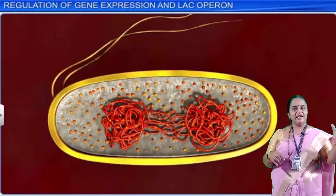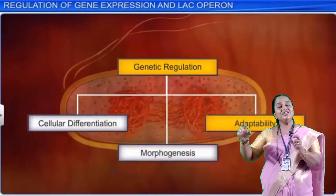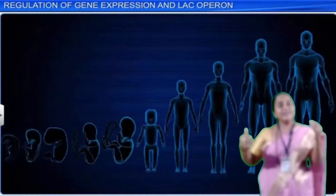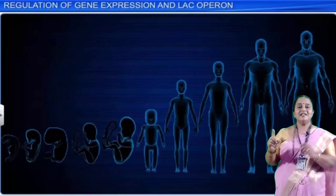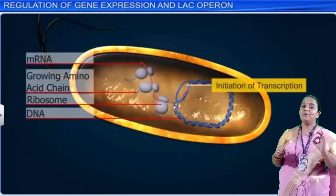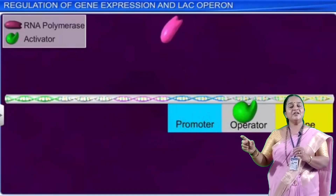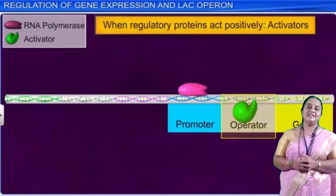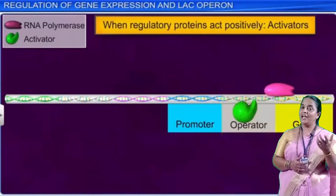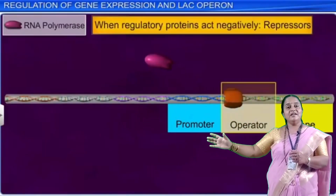mRNA has a cap, leader sequence, initiator codon AUG, and a sensible region with triplets arranged continuously without overlapping. The genetic code is universal in nature. Sometimes codons show ambiguity or degeneracy, but they show polarity during translation. A terminator codon prevents polypeptide synthesis — these are UAA, UAG, and UGA, as they do not code for any amino acid. After the terminator codon, there is a trailer region followed by the tail.